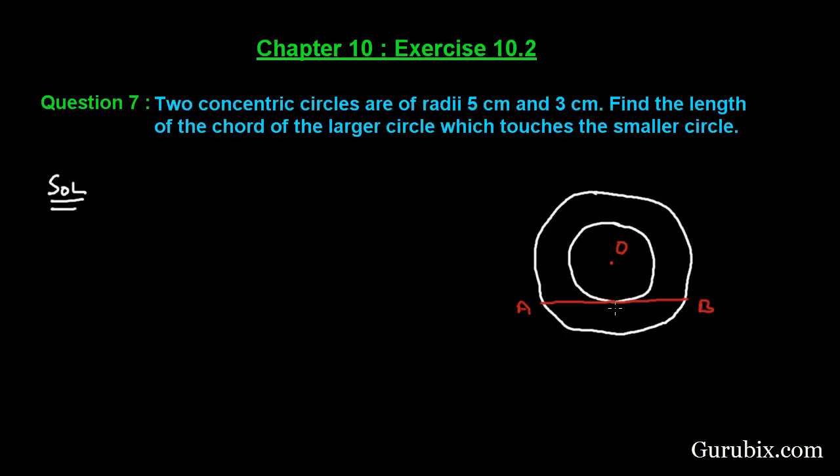Let us join OP. Therefore, OP is the radius of the smaller circle, so this equals 3 centimeters.